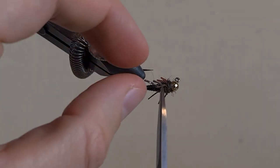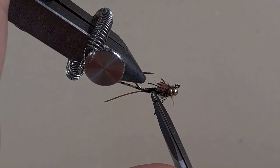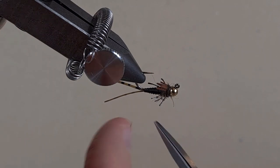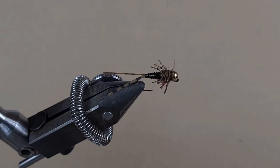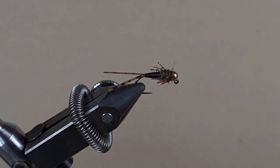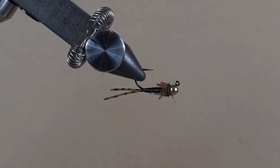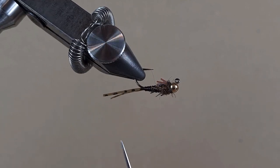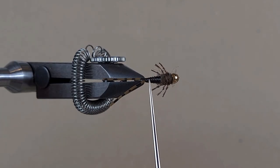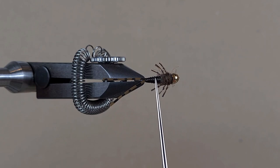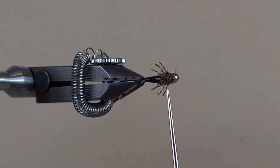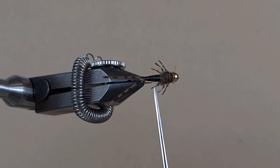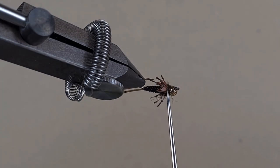Let's cut the legs. Here we go, we have a nice little nymph with the tail that's going to wiggle, with the body that is tapered and segmented, with the thorax, with nice legs, and even wing buds.